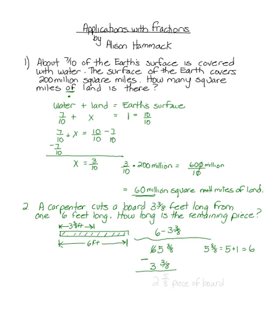Now we can go ahead and do the subtraction. Eight-eighths minus three-eighths is five-eighths. Five minus three is two. So our answer is two and five-eighths piece of board.